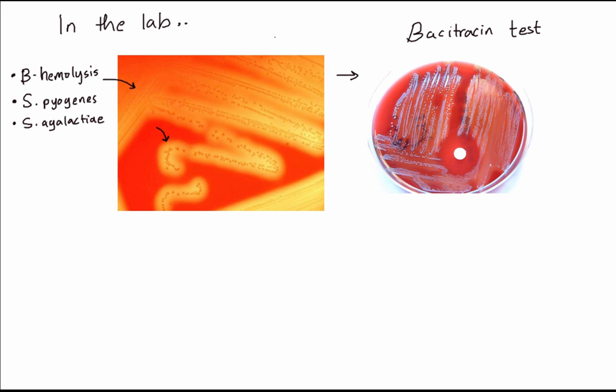This tells us it's either strep pyogenes or strep agalactiae, and we need to do more tests to differentiate between them. The first test we can do is the bacitracin test. Bacitracin is an antibiotic that inhibits strep pyogenes.